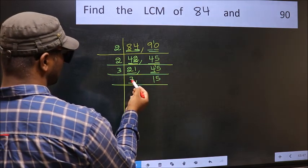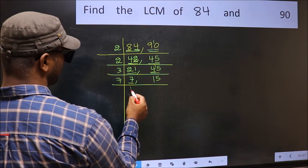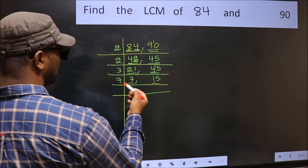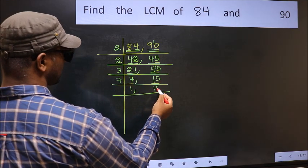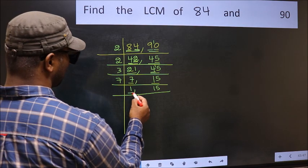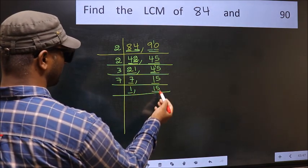Now here we have 7. 7 is a prime number so 7 1s 7. The other number 15 not divisible by 7 so you write it down as it is. Now we got 1 here. So focus on the next number 15.